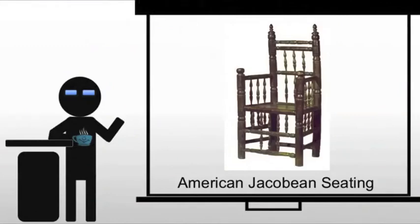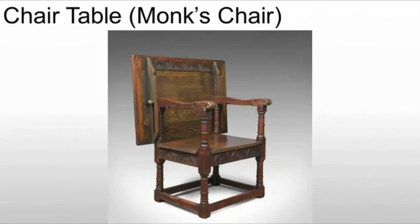We're going to see chairs — the most basic form — and of course there are your basic stools. It's very similar to the Jacobean, but usually with a lot less detail than what you see in the English Jacobean. As we move through, what you tend to see in America early on is going to be multi-purpose furniture.